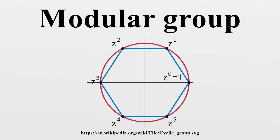It can be shown that these are a complete set of relations, so the modular group has the presentation ⟨S, T | S² = 1, (ST)³ = 1⟩. This presentation describes the modular group as the rotational triangle group, and it thus maps onto all triangle groups by adding the relation Tⁿ = 1. The braid group B₃ is the universal central extension of the modular group, with these sitting as lattices inside the universal covering group. The modular group has a trivial center, and thus is isomorphic to the quotient group of B₃ modulo its center, equivalently to the group of inner automorphisms of B₃. The braid group B₃ is in turn isomorphic to the knot group of the trefoil knot.